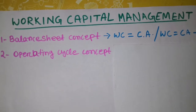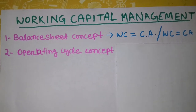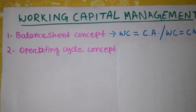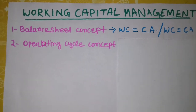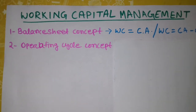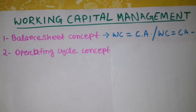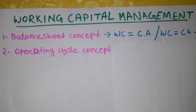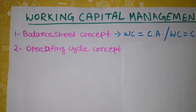Under gross working capital, current assets include: short-term loans and advances, prepaid expenses, accrued income, inventories, raw material, work-in-progress, stores and spares, finished goods, and temporary investment of surplus funds.